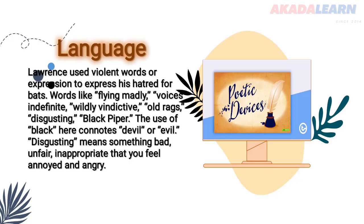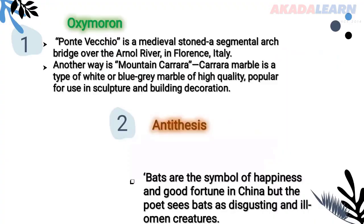Now let's look at the figures of speech. The first is allusion: Ponte Vecchio is a medieval stone segmental arch bridge over the Arno River in Florence, Italy. Carrara marble is a type of white or blue-grey marble of high quality, popularly used in sculpture and building decorations. We also have antithesis: bats are a symbol of happiness and good fortune in China, but the poet sees bats as disgusting and ill-omen creatures — a like and dislike placed together.